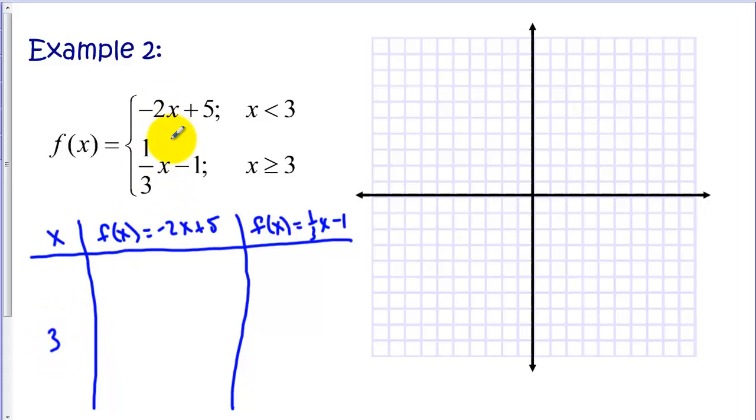Now each of these segments are linear, so I only need one point on each side. So I need a number less than 3. Let's just pick, say, 0. And I need a number bigger than 3. Let's pick 6.